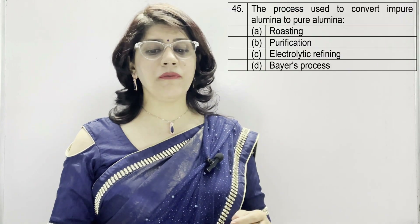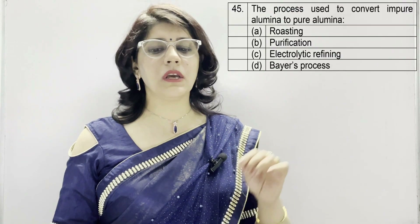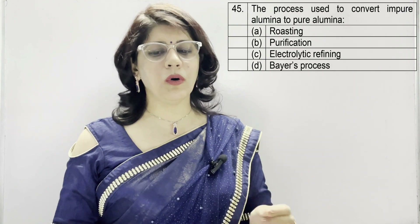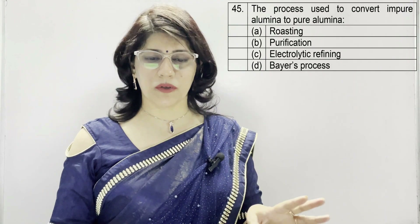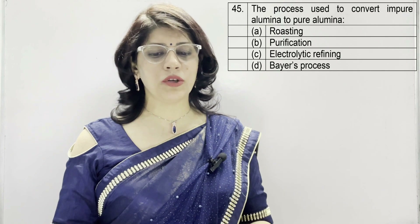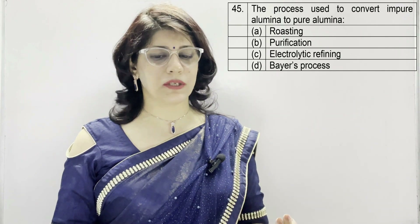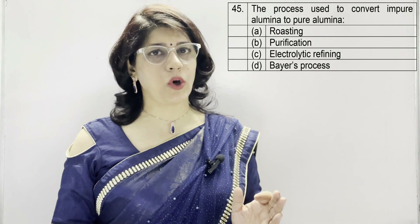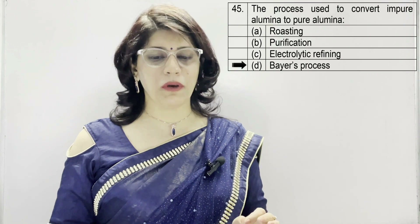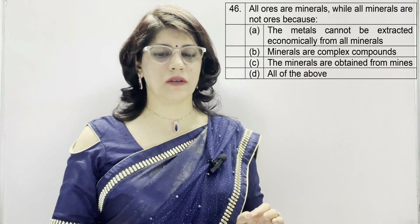In question number 45: the process used to convert impure alumina to pure alumina is — A: roasting, B: purification, C: electrolytic refining, D: Bayer's process. The correct option is D — Bayer's process.